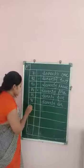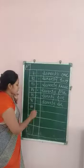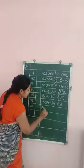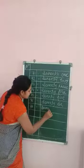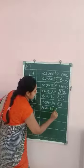After 76 — 7, 7 — 77. S, E, V, E, N, T, Y — 70.